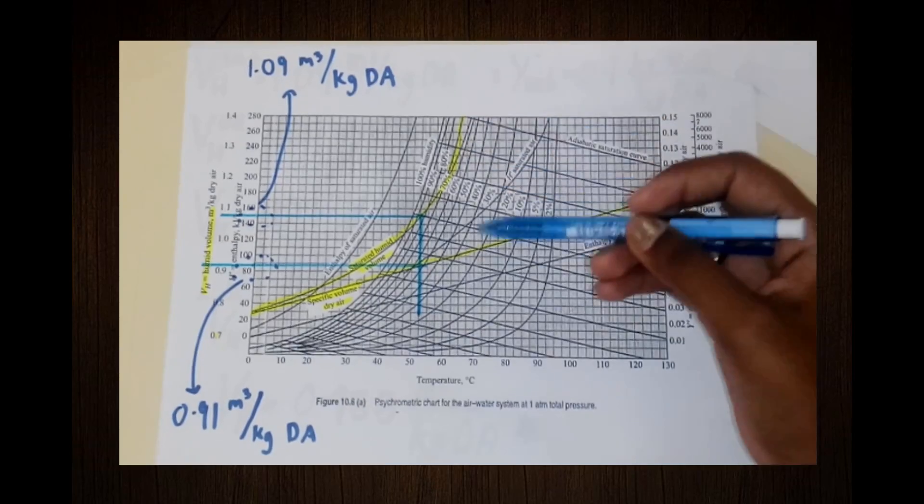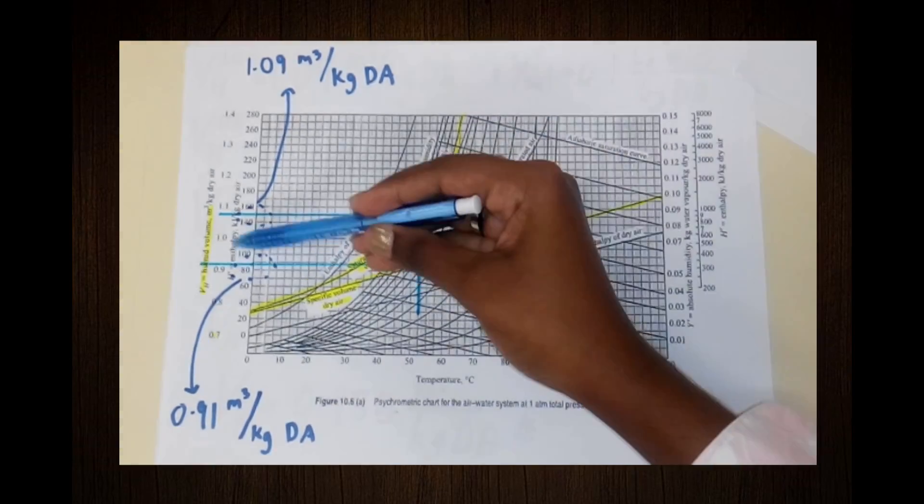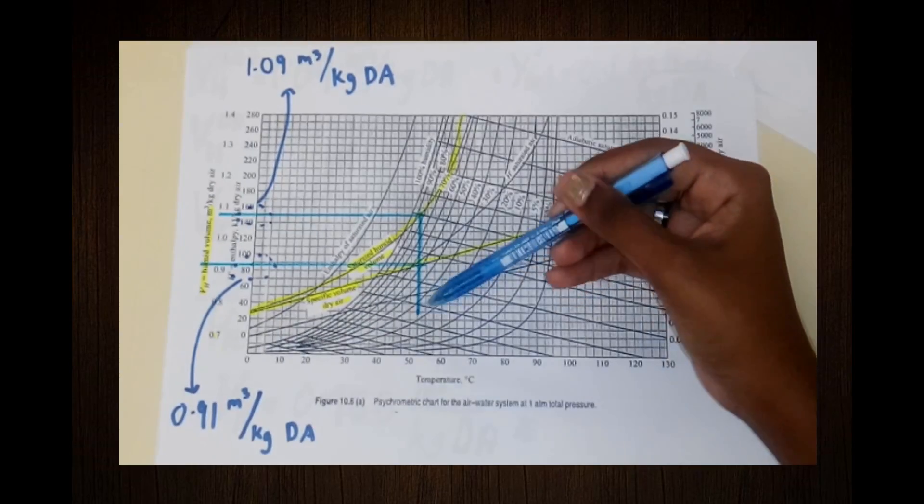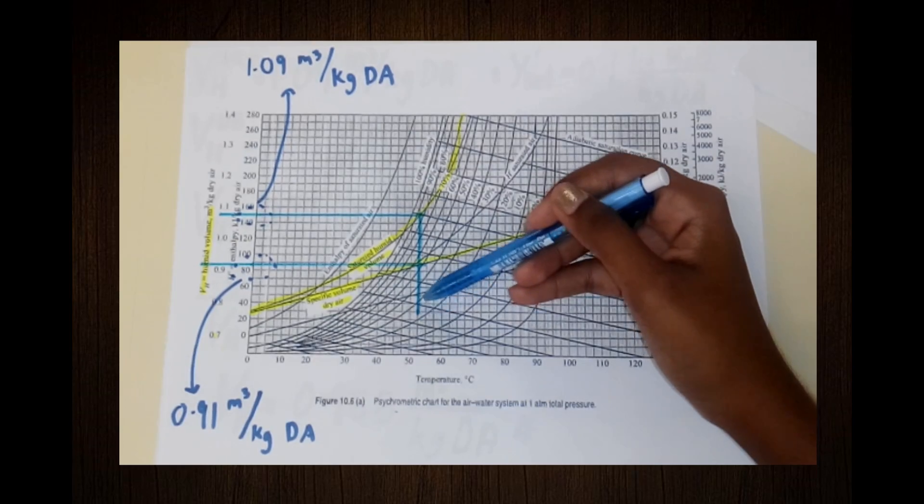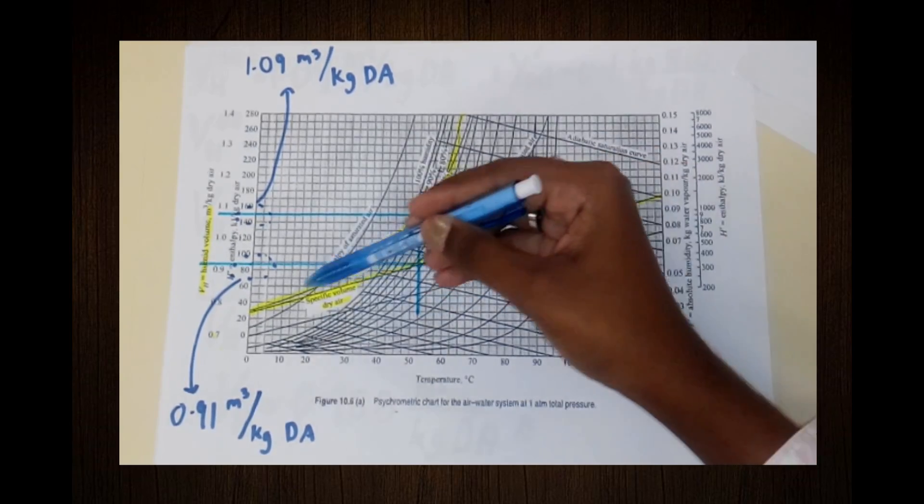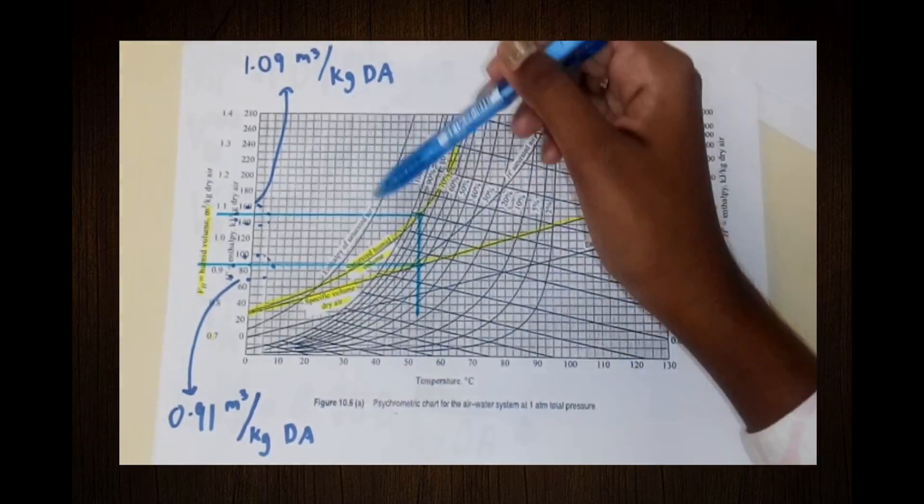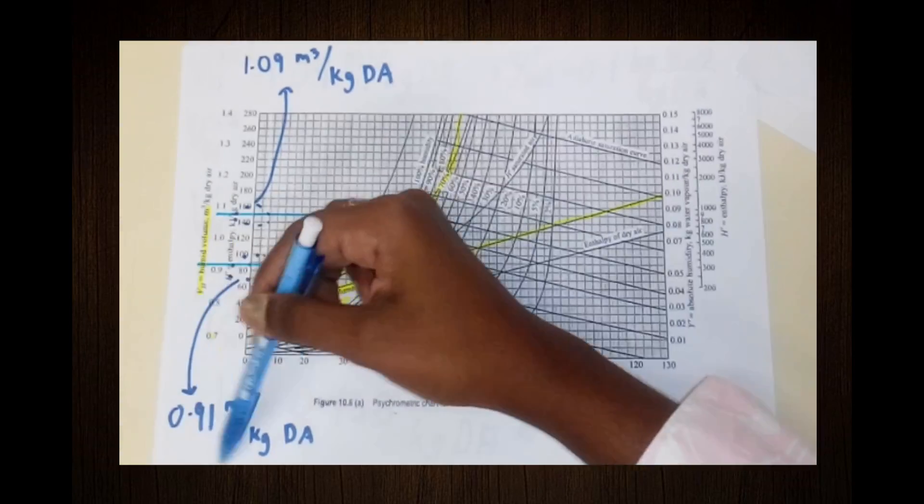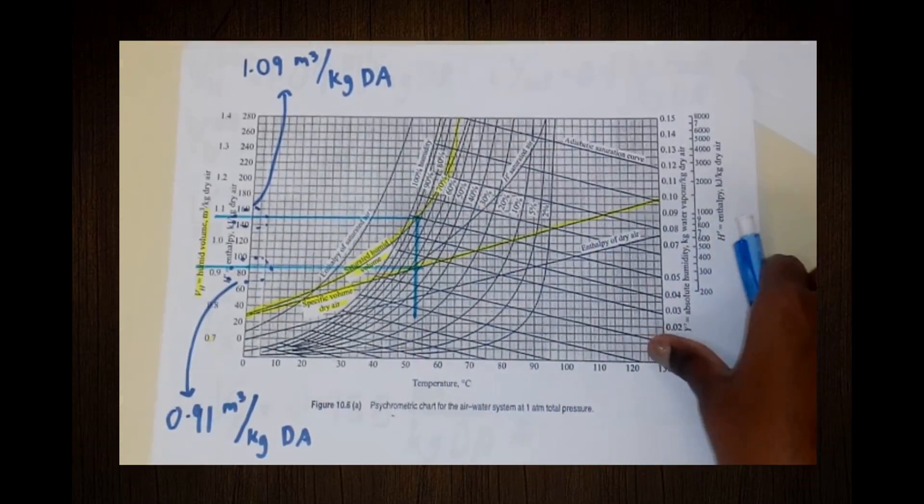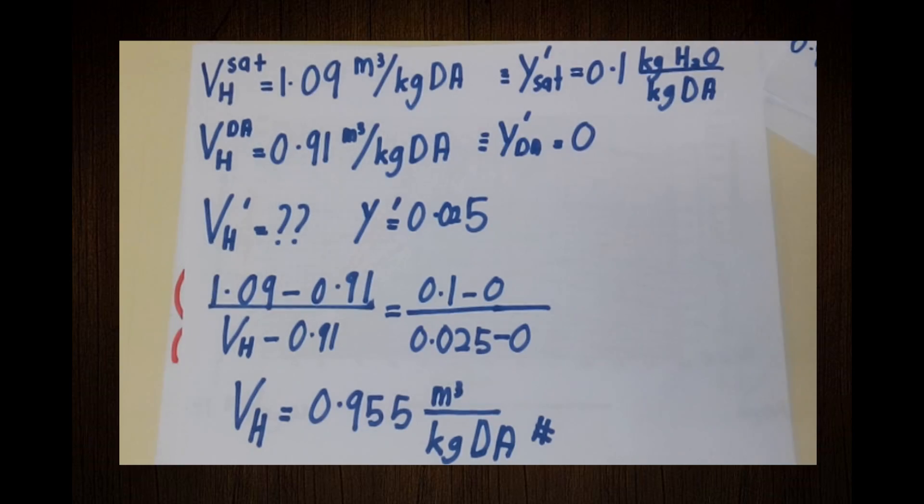Besides that, let's look at the saturated volume curve and specific volume of dry air curve. The scale for this curve is at the left. We need to find the volume of saturated and dry air. The humid volume of saturated air is 1.09 meter cube per kilogram dry air, while the specific volume for dry air is 0.91 meter cube per kilogram dry air. Perform interpolation and we find that the humid volume of our point is 0.955 meter cube per kilogram dry air.